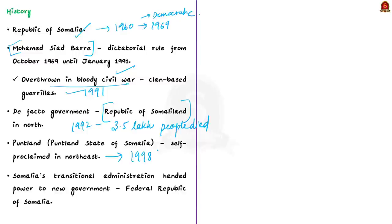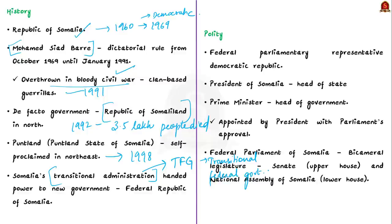To handle the crisis, a new transitional government called the Transitional Federal Government was set up in 2004. Currently, the Federal Government of Somalia was formed in 2012 and replaced the transitional federal government. After 2012, there was hope that the new government would bring peace and help in rebuilding the country. Somalia established a new constitution in 2012.